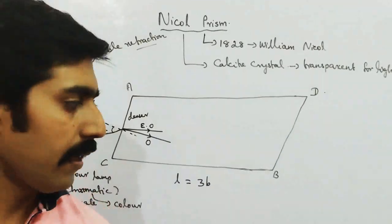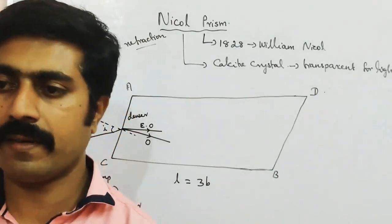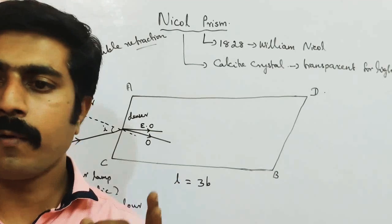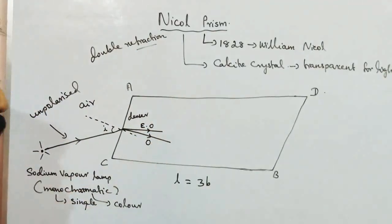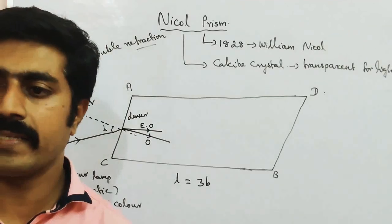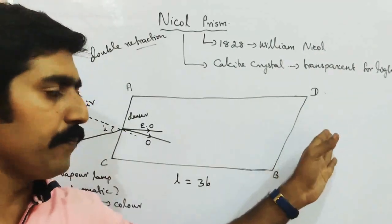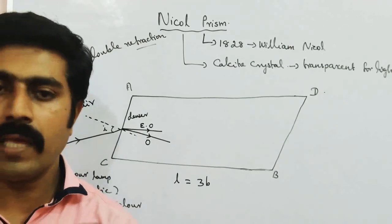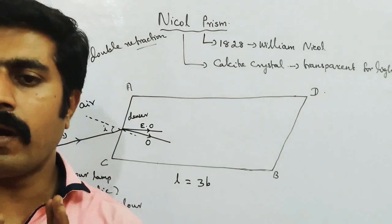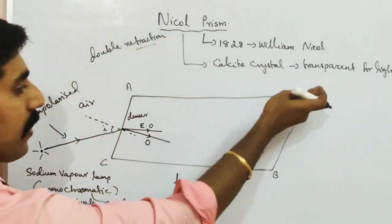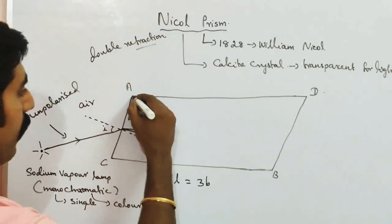The Nicol Prism, made up of calcite crystal, acts as a polariser as well as an analyser. A polariser is a device which is used to polarise the light, or produce plane polarised light from unpolarised light. An analyser checks whether the light beam is plane polarised or not.